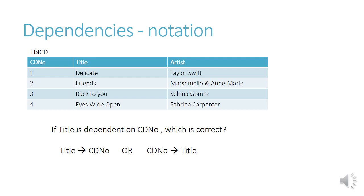Another table would be the table of CDs. We have the CD number — numbered one, two, three, four — these are just somebody's collection of CDs that they've listed. There are the titles and the artist of each CD. If the title is dependent on the CD number, which is the case, do you have title pointing to CD number, or CD number pointing to title? It's CD number points to title, which is correct.